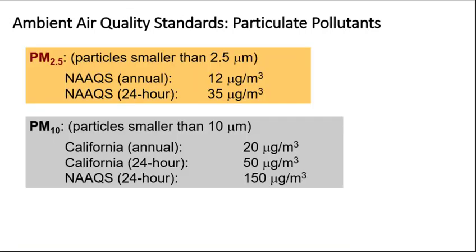The NAAQS and California air quality standards for the particulate criteria air pollutants PM2.5 and PM10 are listed here. PM2.5 has a NAAQS annual standard of 12 micrograms per cubic meter and a daily 24-hour standard of 35 micrograms per cubic meter. PM10 has a 24-hour NAAQS standard of 150 micrograms per cubic meter, and California also has both annual and 24-hour standards for PM10. Micrograms per cubic meter expresses mass concentration, similar to parts per million or parts per billion.